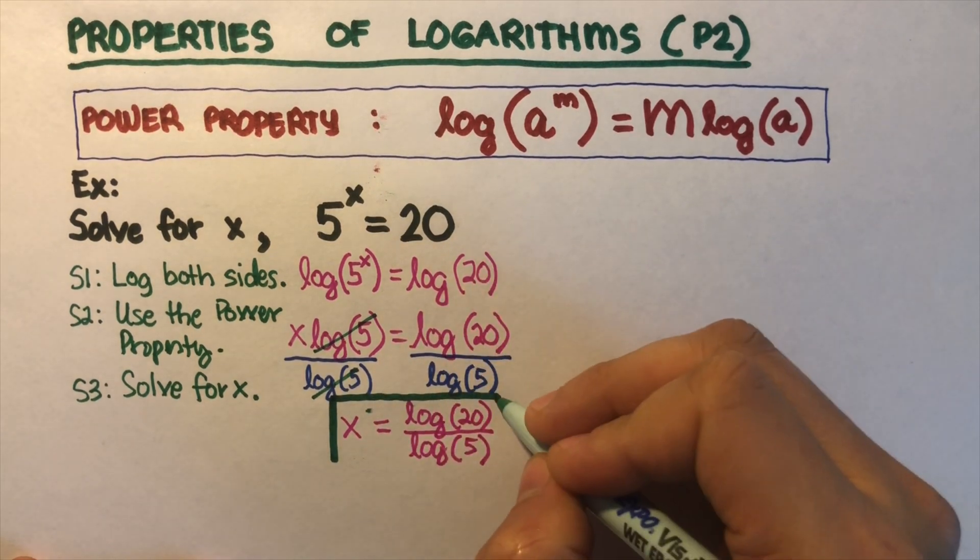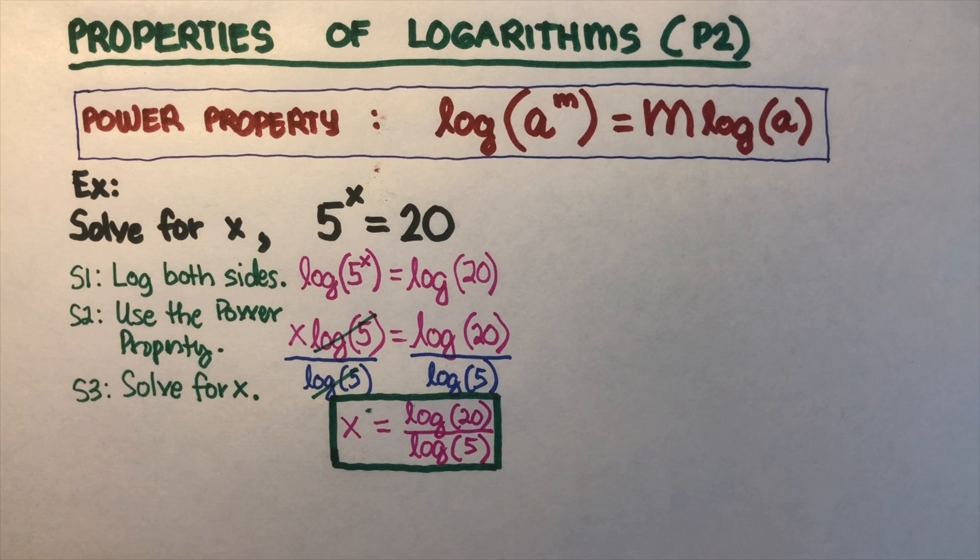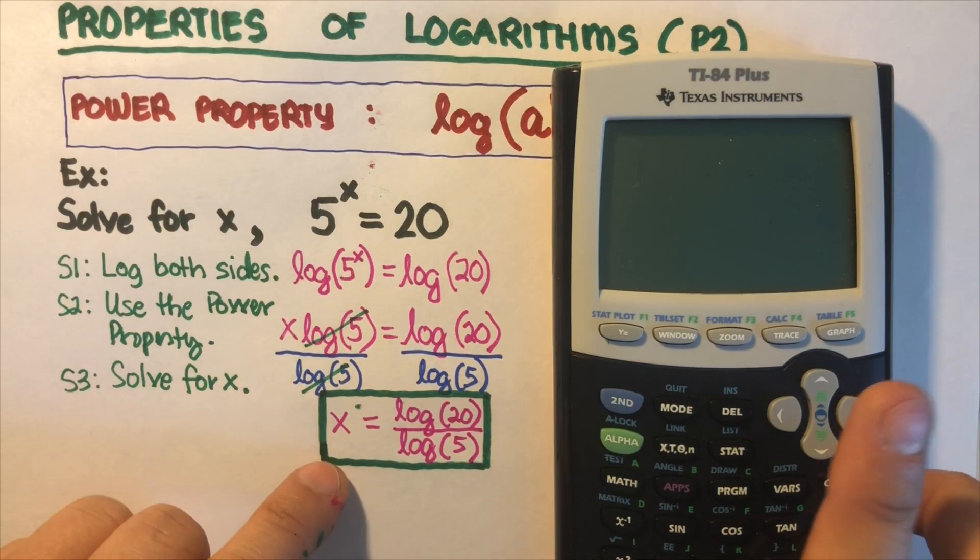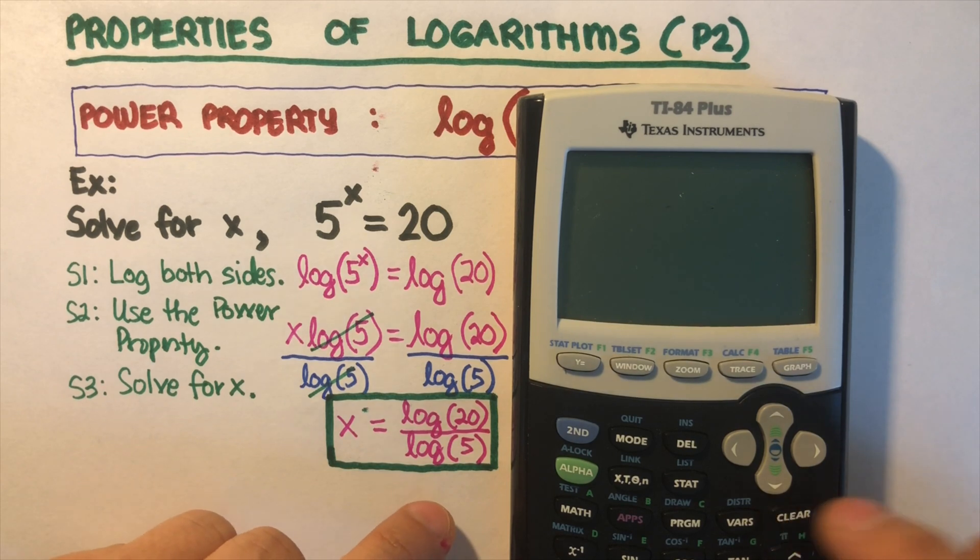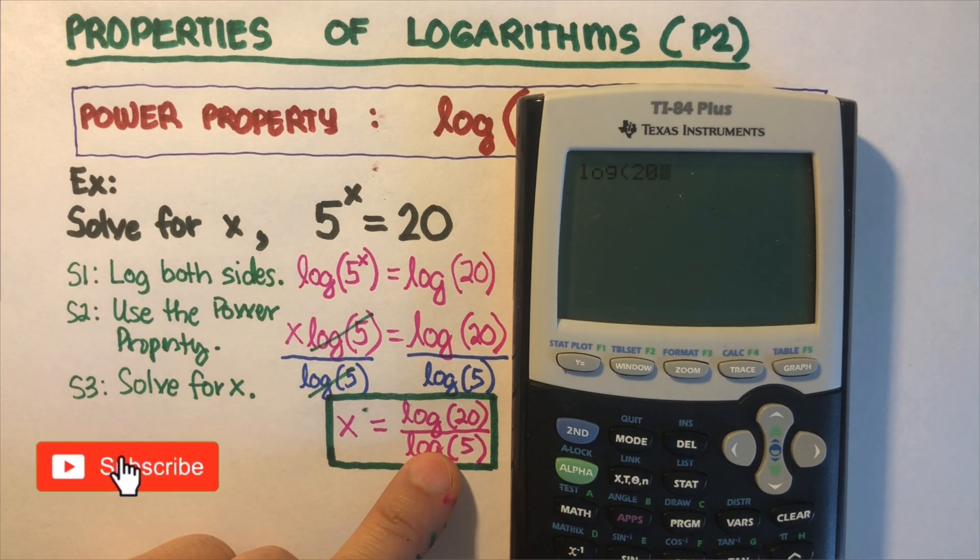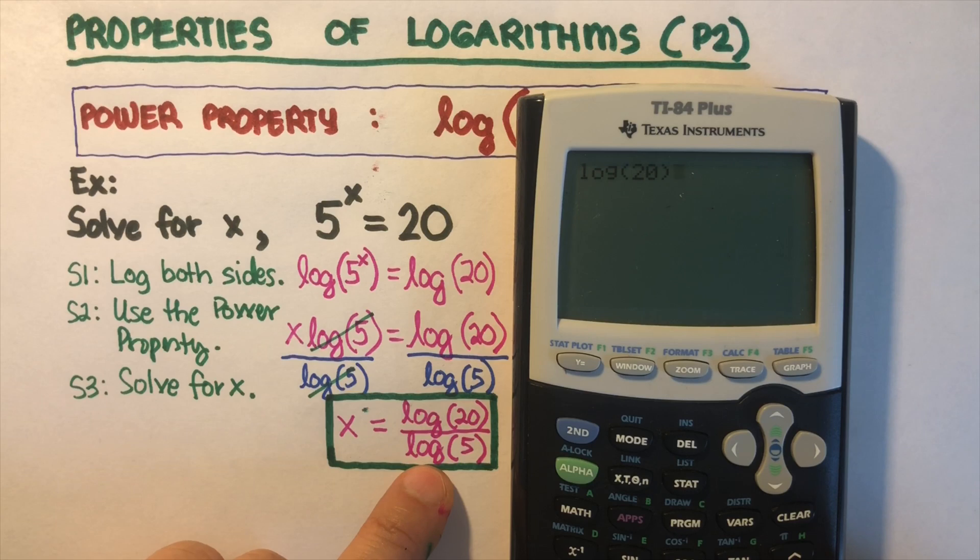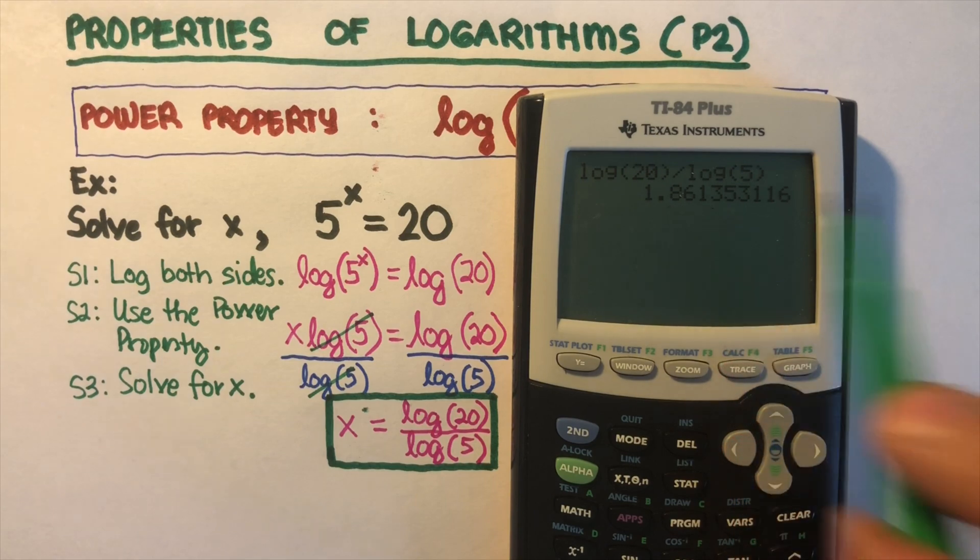Now if we want the value, because this looks like a complicated expression, we can use calculator to find the value for x. To do that, we are supposed to divide it. So we do log of 20, close parentheses. Be sure that you close the parentheses, divided by log of 5, close parentheses. And that's the answer right there in decimal form. It's almost around 2.